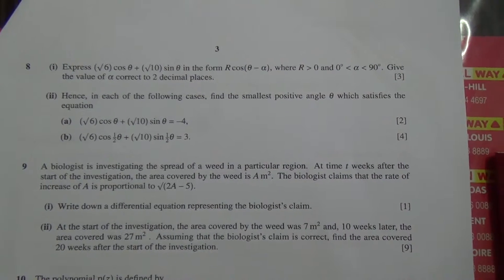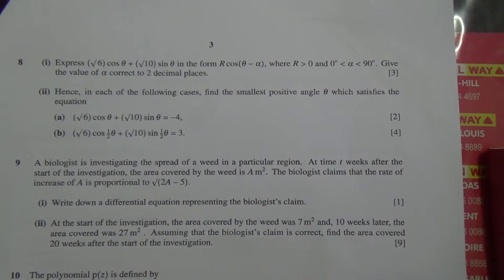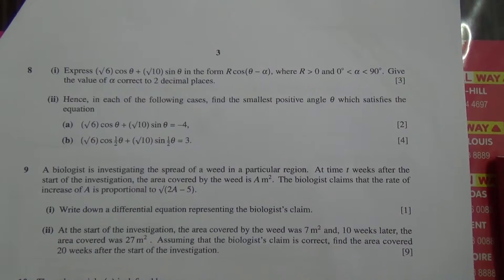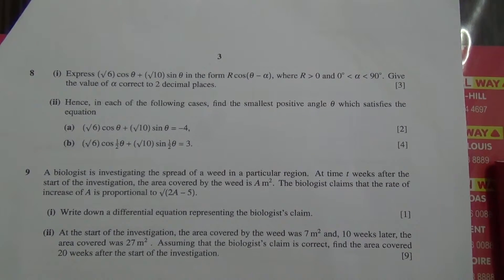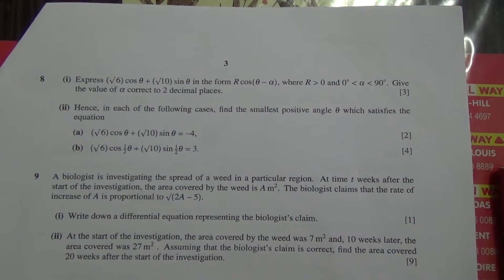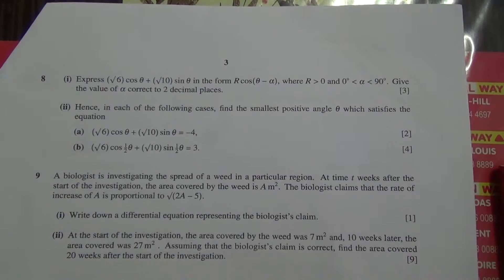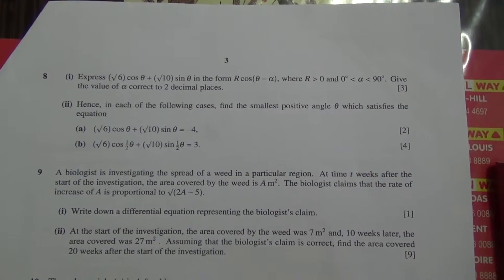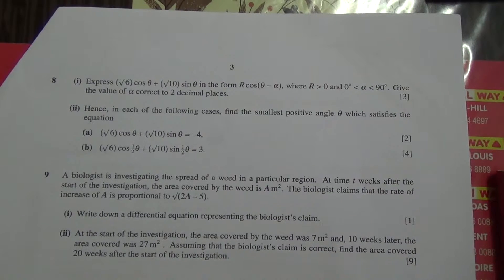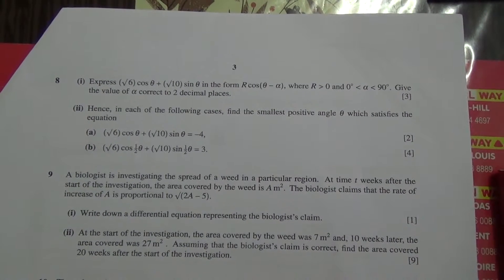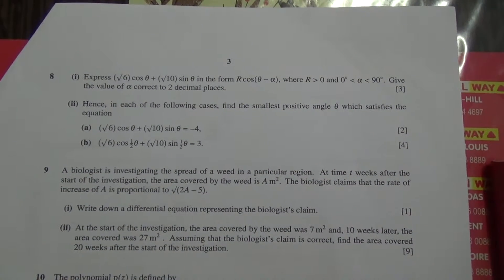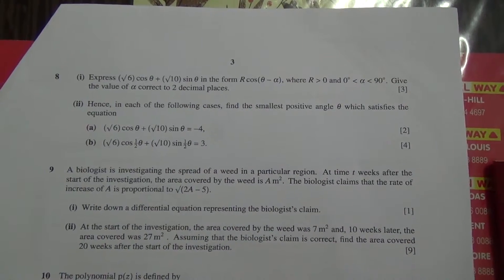Question number 8. For the first part, express root of 6 cos theta plus root of 10 sine theta in the form r cos(theta minus alpha), where r is greater than 0 and 0 is less than alpha, less than 90 degrees. Give the value of alpha correct to two decimal places. For the second part, hence in each of the following cases, find the positive angle theta which satisfies: part a) root 6 cos theta plus root 10 sine theta equals minus 4, and part b) root 6 cos(half theta) plus root 10 sine(half theta) equals 3.